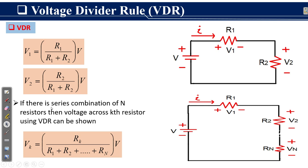To understand the voltage divider rule, we consider a circuit consisting of two resistors R1 and R2 connected in series, also connected to an applied voltage V. V1 is the voltage drop across resistor R1 and V2 is the voltage drop across resistor R2. The polarity of the applied voltage V is plus and minus, while the polarities of V1 and V2 are also plus and minus with respect to the applied voltage source.